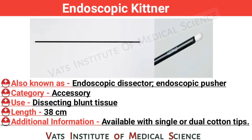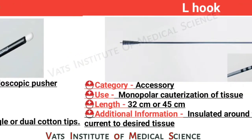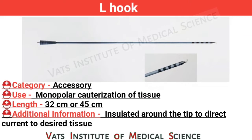Endoscopic chitener, also known as endoscopic dissector or endoscopic pusher. Category: accessory. Use: dissecting blunt tissue. Length: 38 cm. Additional information: available with single or dual cotton tips.